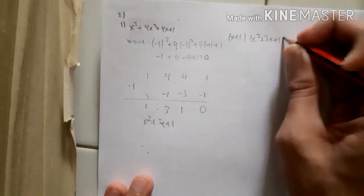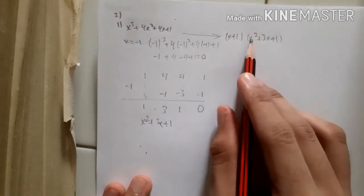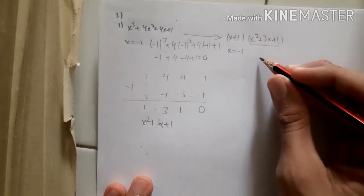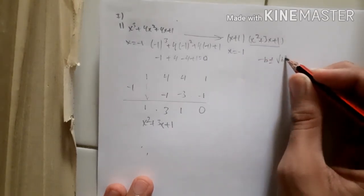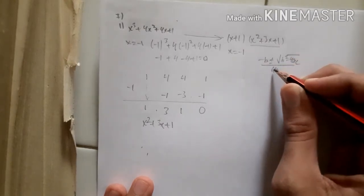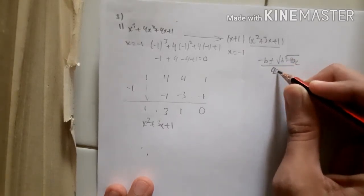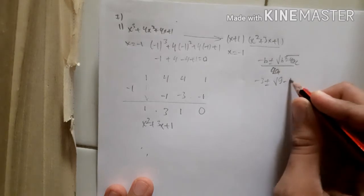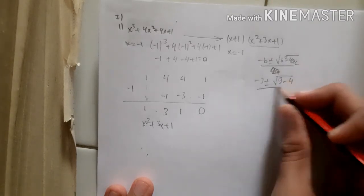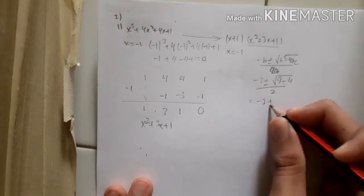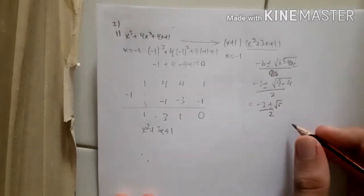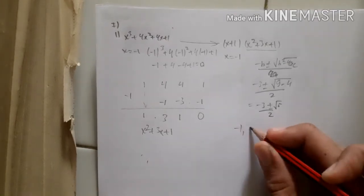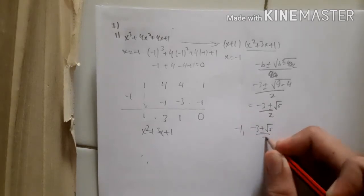From the factored form, we find the roots. The first root is x = −1. For x² + 3x + 1, we apply the quadratic formula: x = (−3 ± √(9 − 4)) / 2 = (−3 ± √5) / 2. So the complete answer for problem 1 is x = −1 and x = (−3 ± √5) / 2.